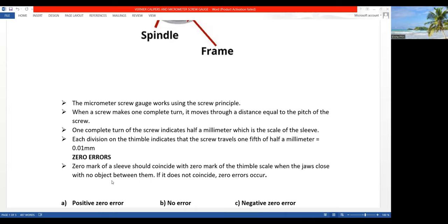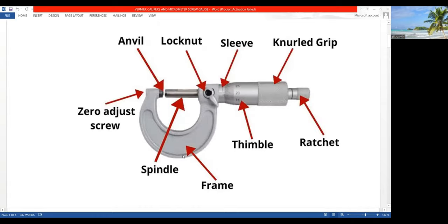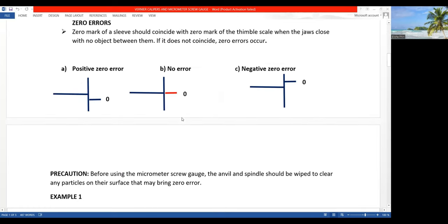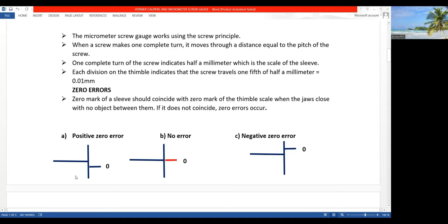So now, what are the zero errors? You have to make sure that before you begin to use the micrometer screw gauge, there's a zero here on the scale of the thimble. It has to coincide with this line, which is on the sleeve.